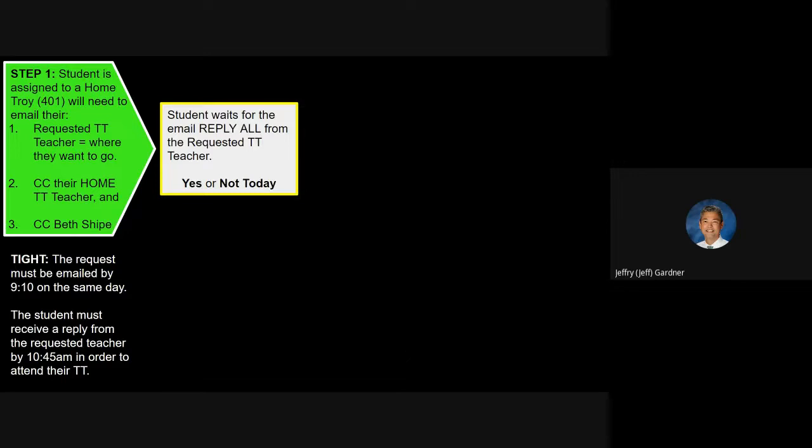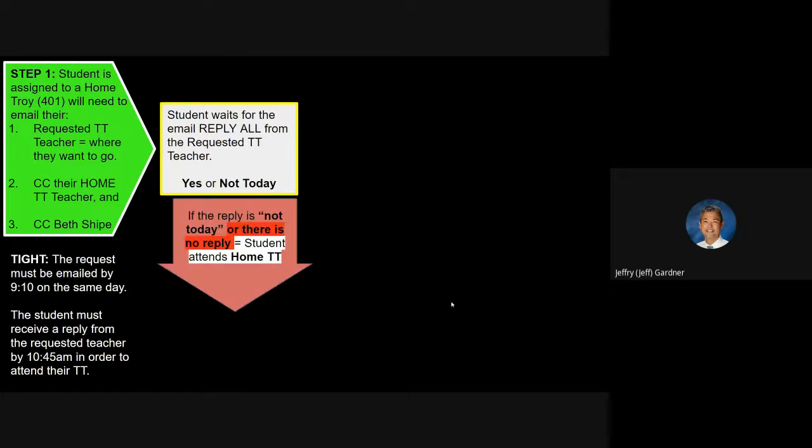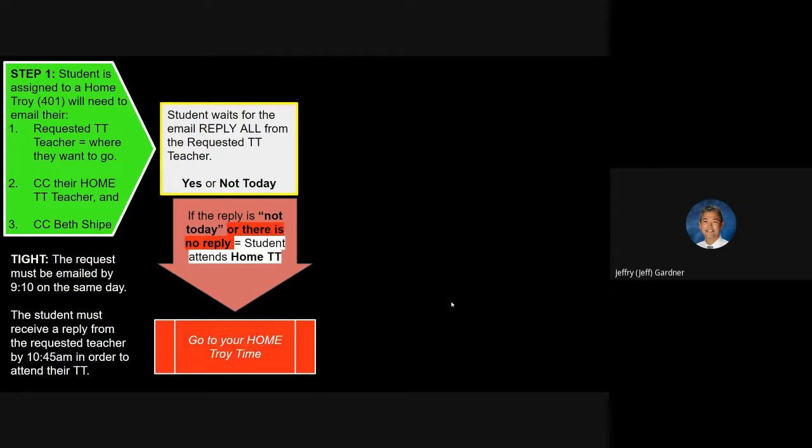Then you got to play the waiting game. Student waits for the email reply, and it's going to be reply all. So if you're the requested teacher, you got to reply all - you're replying to the student, to the home Troy teacher, and also to Ms. Scheip. You've got one or two things you can say: you can say yes, which is awesome, or you say not today. So if the reply is not today or there is no reply - because sometimes there might be a substitute teacher that the student doesn't know about and they're not going to reply - take the no reply as a not today. If that's the case, the student then attends the home Troy time. You got to go there.